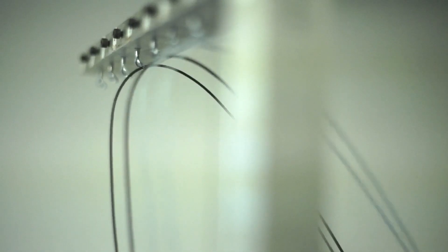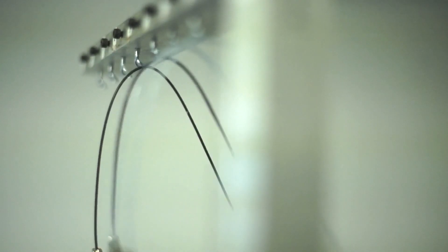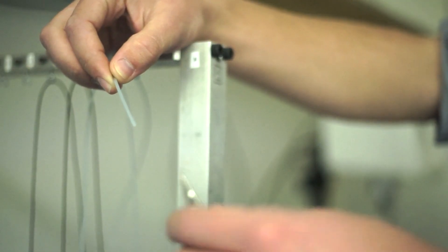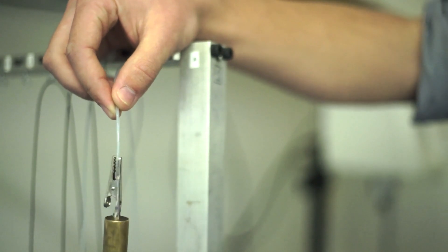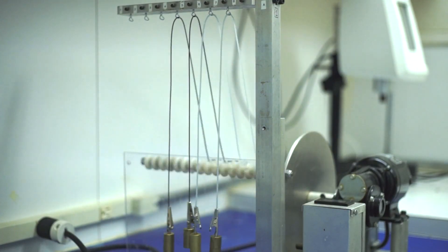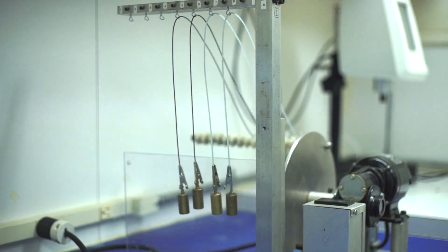For our durability test, we load a variety of different fly lines onto a rotating cam that basically cycles the lines through a rod tip guide that varies the angle. On the end of the fly line, we attach a weight that is analogous to a weight that you would see while you're casting or fighting a fish, and essentially that line just goes back and forth through that tip top guide many times until it breaks.